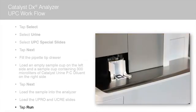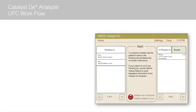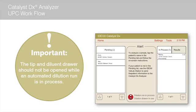The Catalyst DX Analyzer begins to process the patient sample automatically. A timer displays next to the patient's name in the In Process list indicating the time remaining until the run is complete. The tip and diluent drawer should not be opened while an automated dilution run is in process. You can verify if an automated dilution run is in process by reviewing the status icons on the Catalyst DX home screen.